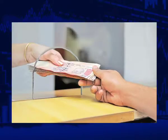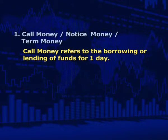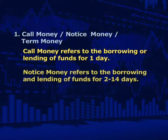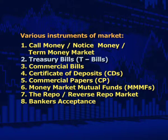The organized money market in India is not a single market but a conglomeration of markets of various instruments. Call money, notice money, and term money market refer to markets for very short-term funds. Call money refers to borrowings or lendings of funds for one day. Notice money refers to borrowing and lending of funds for 2 to 14 days, while term money refers to borrowing and lending of funds for a period of more than 14 days.